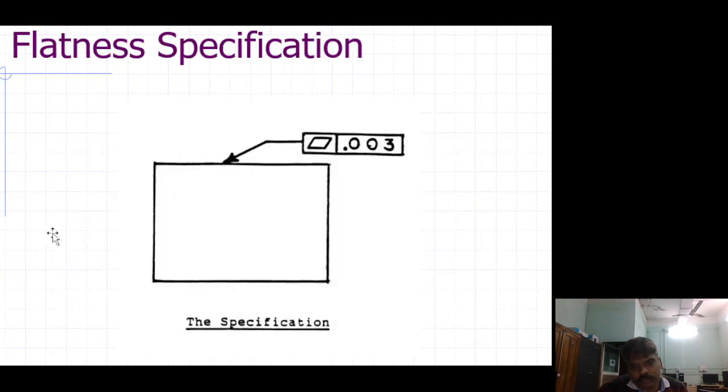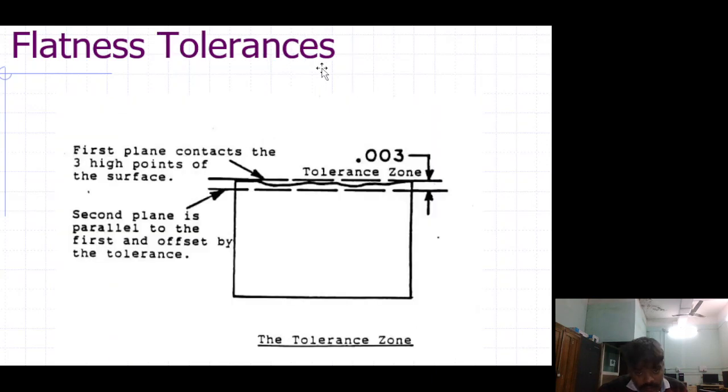Flatness specification: 0.003 flatness tolerance. First plane contacts the three high points of the surface. Second plane is parallel to the first and offset by the tolerance.